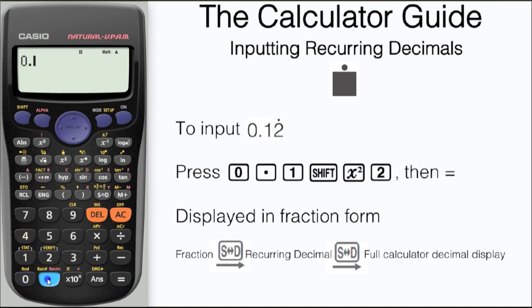Let's try that again, this time with 0.12 recurring, where the 2 is the recurrence. We need to input 0.1 first, then press our recurrence feature and input 2.